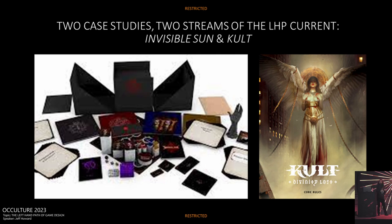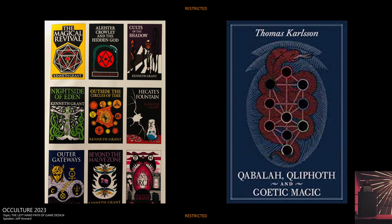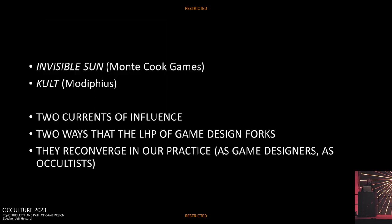So let me give you two that do. On your left is Invisible Sun, on your right is Kult. These are two streams of the left-hand path current, influenced respectively by Kenneth Grant — whose Typhonian Trilogies are very much behind Invisible Sun — and Thomas Carlson, whose books on Kabbalah and Klippoth are very much behind Kult. I want to show the way they branch, reconverge, and in so doing can help benefit our practice as occultists.